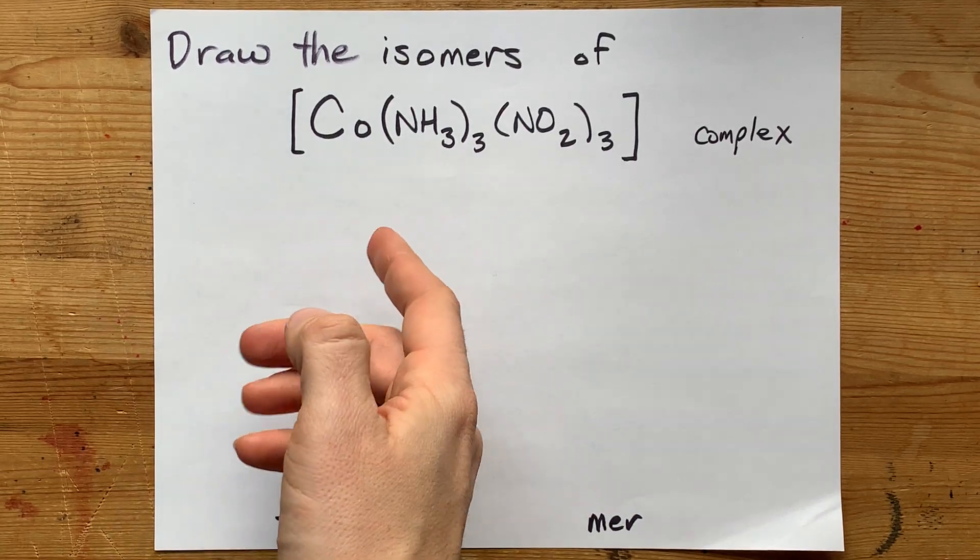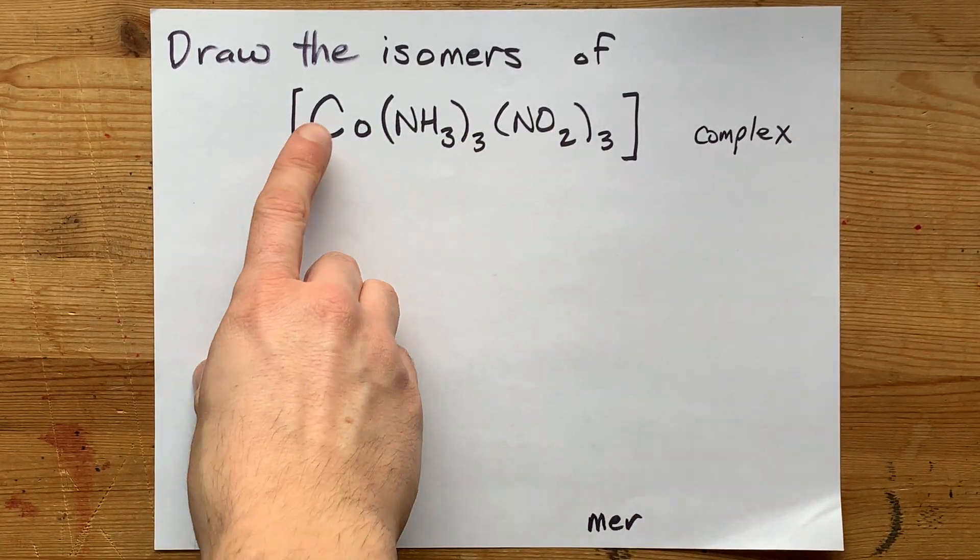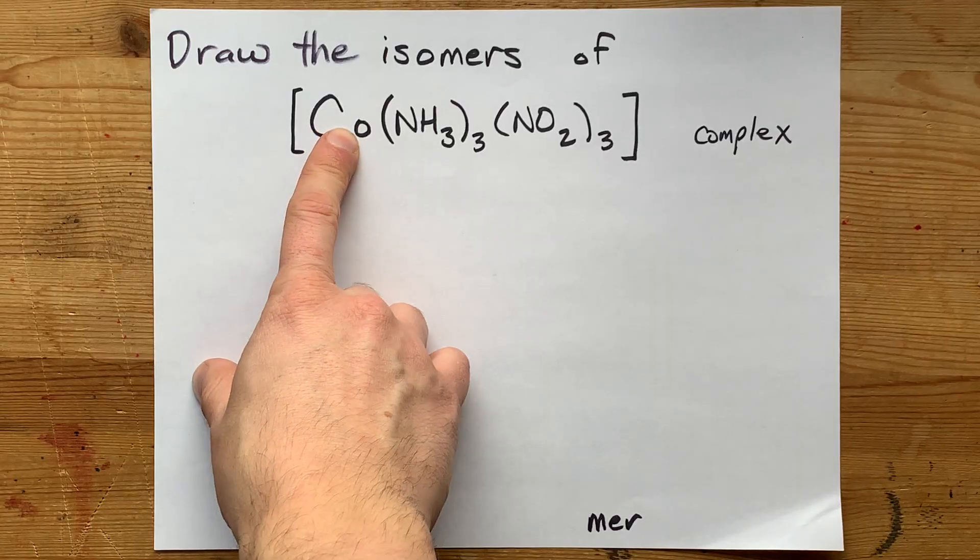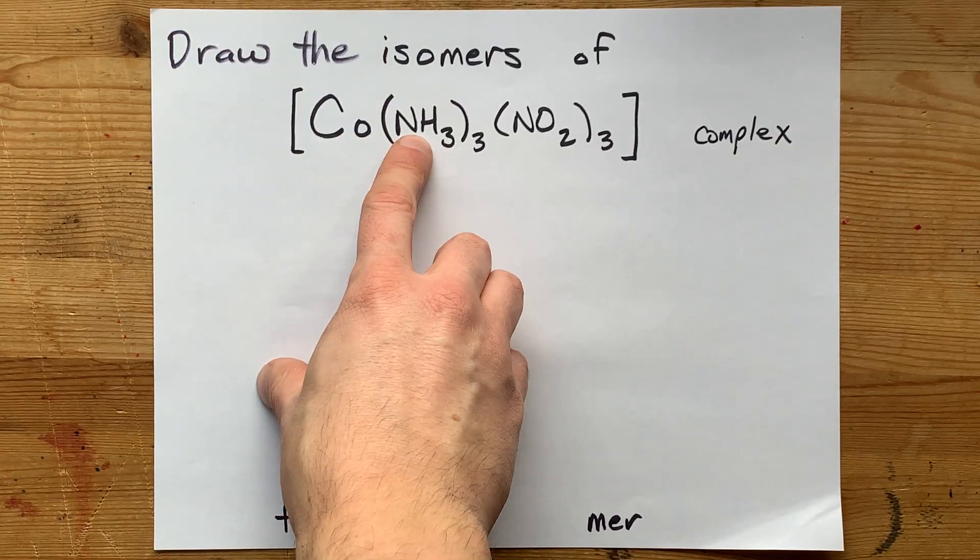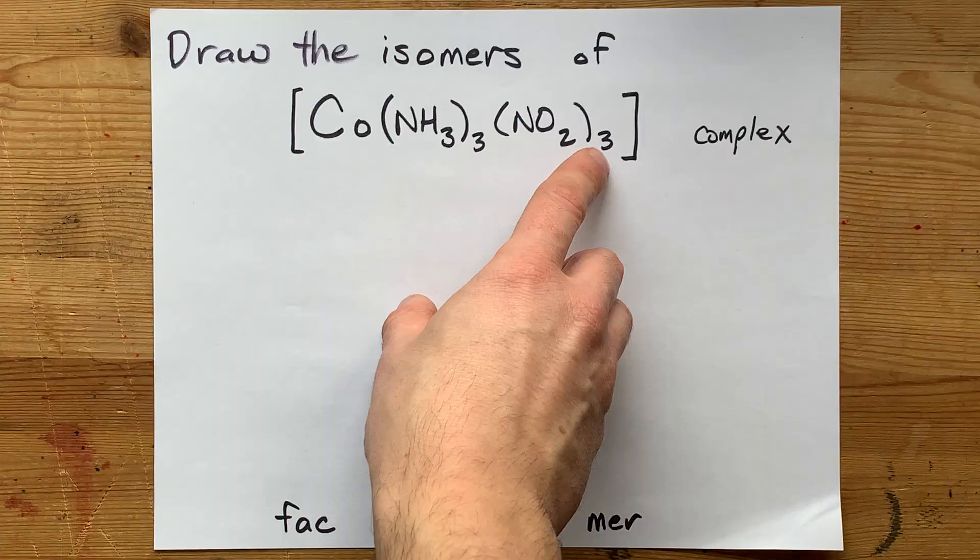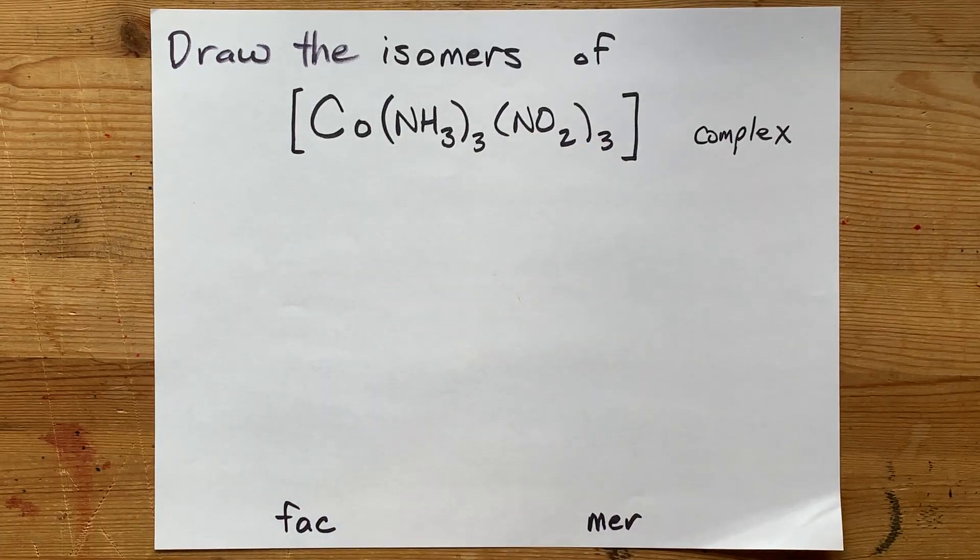Let's draw the isomers of this complex, which is a cobalt ion surrounded by three ammonia molecules and three nitrite ions.